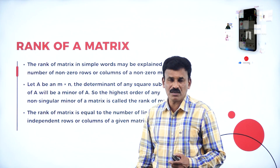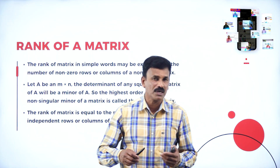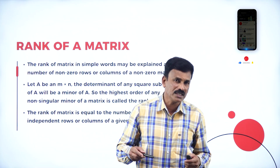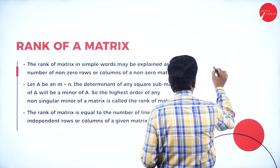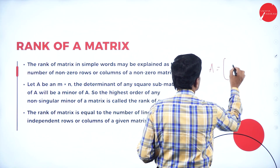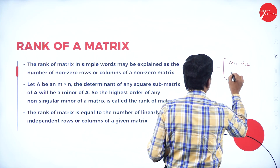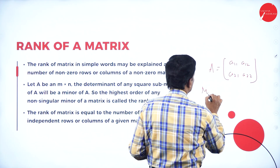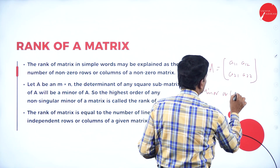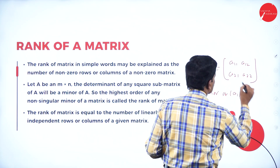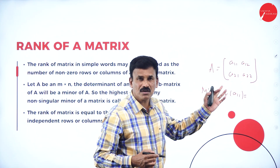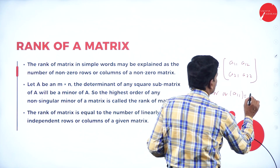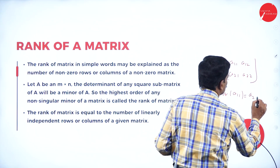Now, how to find the rank of a matrix? To find the rank of a matrix, just recall the minor of an element. Suppose if A is a 2x2 matrix with elements A11, A12, A21, and A22, then the minor of any element A11 is found by deleting the row and column containing A11, leaving you with A22.